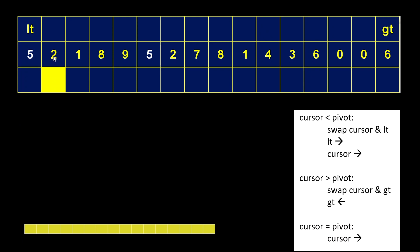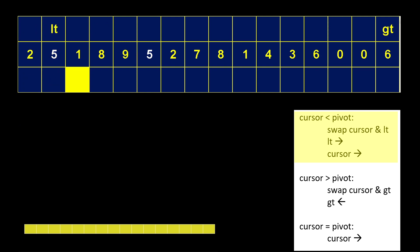Now the cursor is at two. Two is less than the pivot, so that means we're in rule number one. The first thing we're going to do is swap the number at the cursor with the number at LT — so this five and this two are going to swap. The second thing we're going to do is move LT to the right by one, and then finally move the cursor to the right by one. Now the cursor is at one, and we compare one with the pivot. Again, the cursor number is less than the pivot, so we do those same three steps: we swap one and what's at LT, which is five, move LT to the right, and move the cursor to the right.